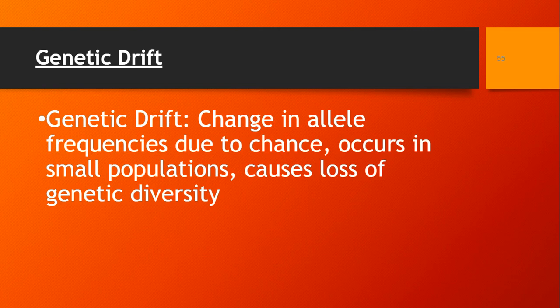Genetic drift is when allele frequencies are changed due to chance — a totally random thing that happens with no natural selection and no choice involved. This occurs in small populations and causes the loss of genetic diversity, meaning the population would be all pretty similar genetically, which is not a good thing.